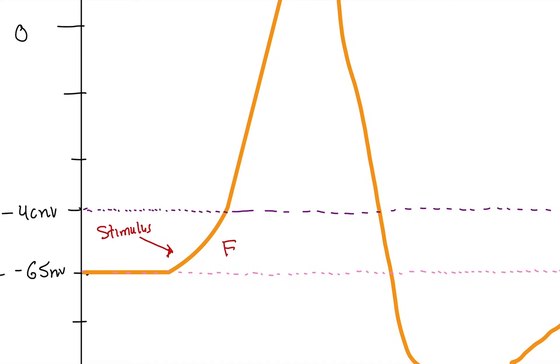So see how it's going up? We call this an EPSP, or excitatory postsynaptic potential. So it's going up. If it was going down instead, we call it an IPSP, or inhibitory postsynaptic potential.